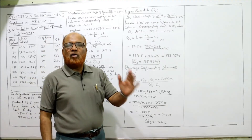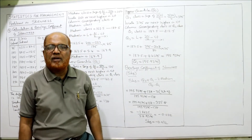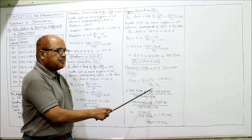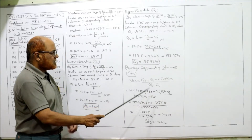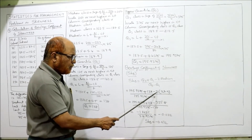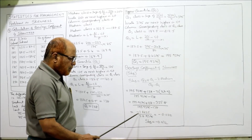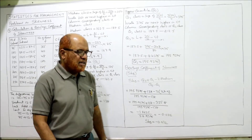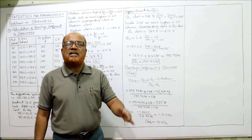Now substituting into Bowley's formula: SKB = (Q3 + Q1 − 2·Median) / (Q3 − Q1) = (195.9375 + 138 − 2×167.9) / (195.9375 − 138). Numerator: 195.9375 + 138 − 335.8 = −1.8625. Denominator: 57.9375. SKB = −0.032. There is negative skewness in this data.